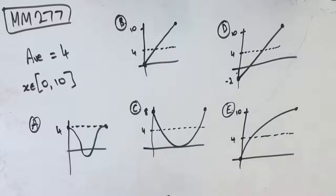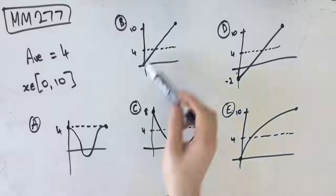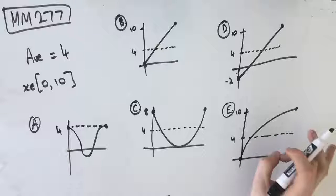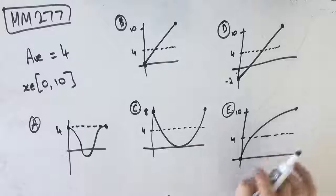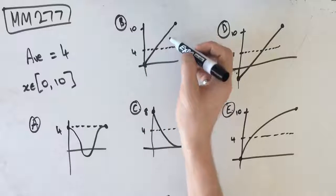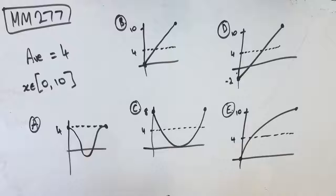Alright guys, there's multiple ways to work this out. You could figure out the equation of each one of these and then basically figure out the average value from there. But the essential thing with an average value is that the area between the line y equals 4 and the graph is going to be the same on either side of the average value.